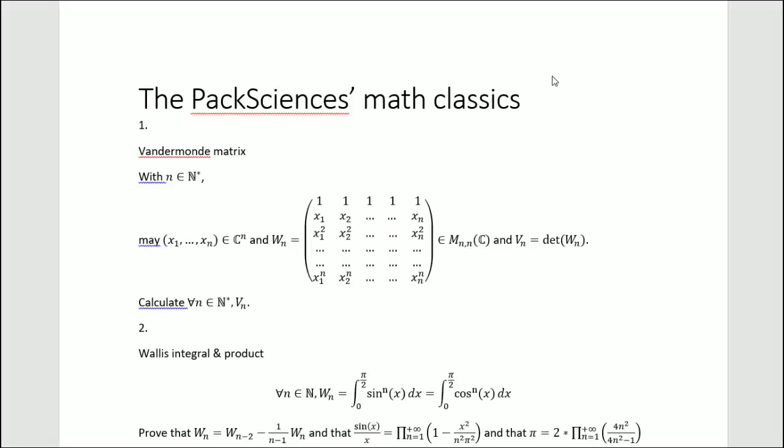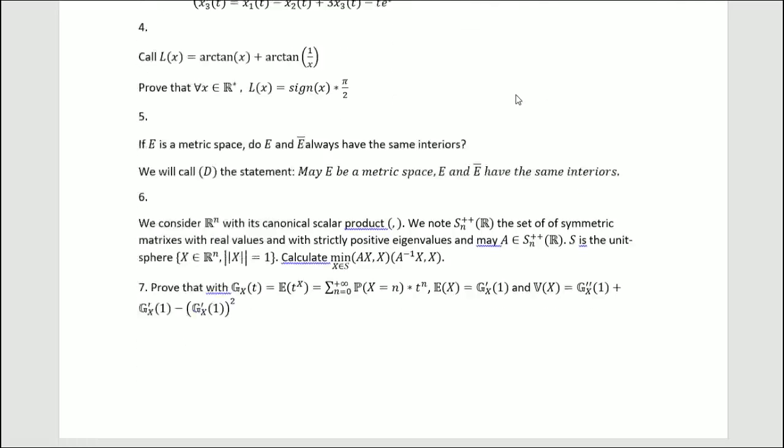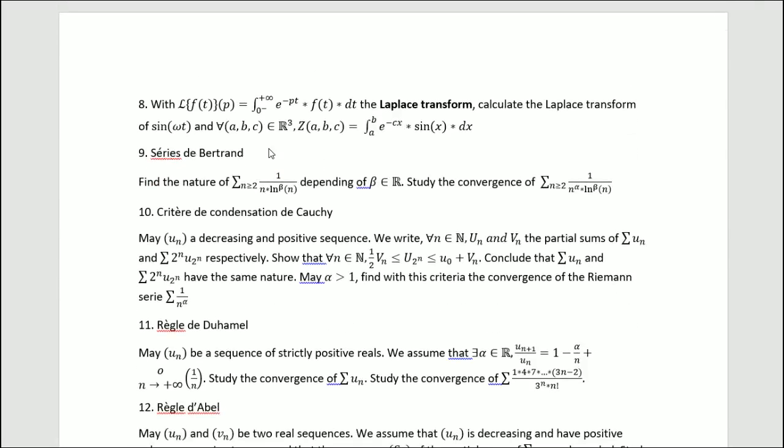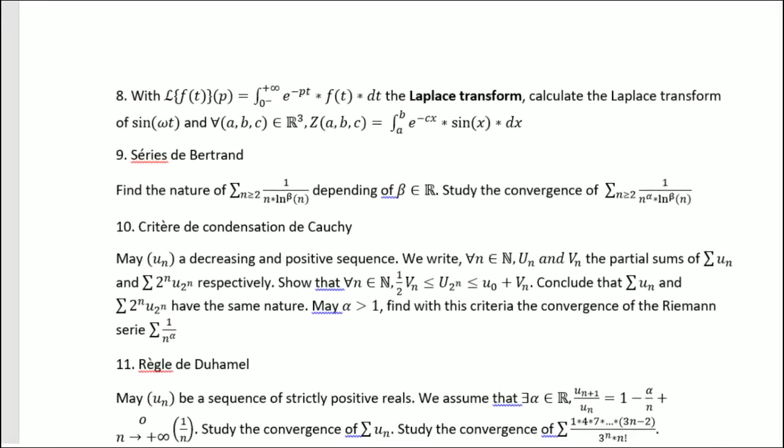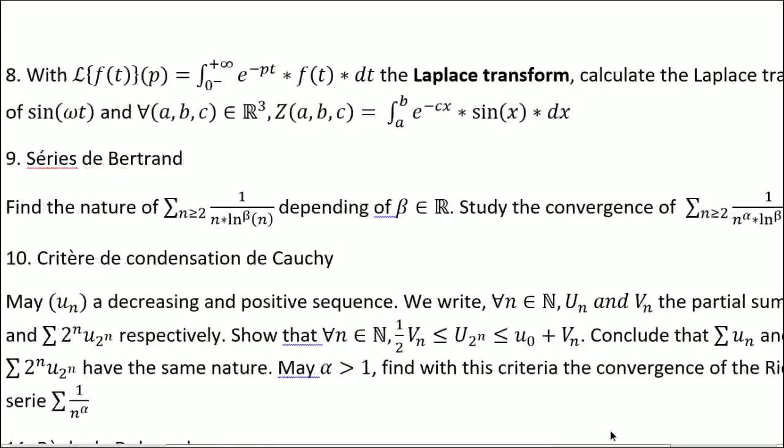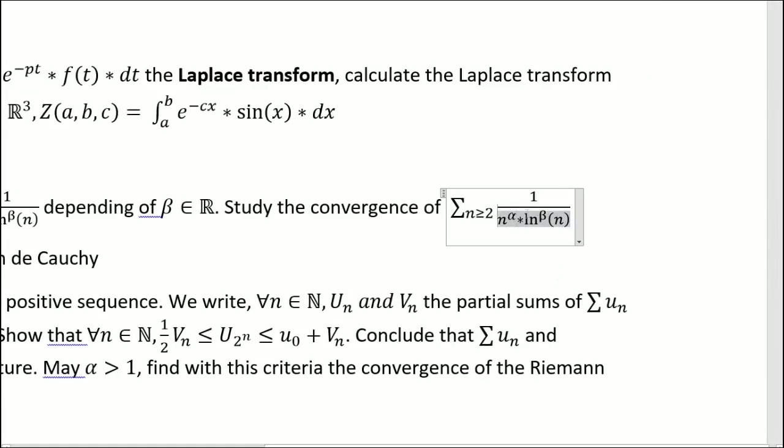Hello, welcome to this episode of The Classics. Today I will be talking about the série de Bertrand or Bertrand series. So we're going to mess around with this object here. This is a sum of 1 over n to the power alpha times natural logarithm to the power beta of n.